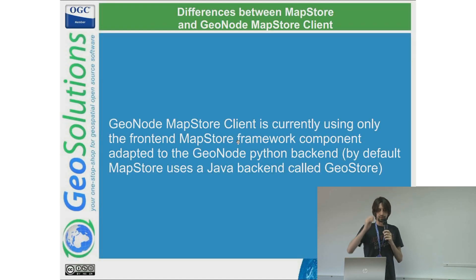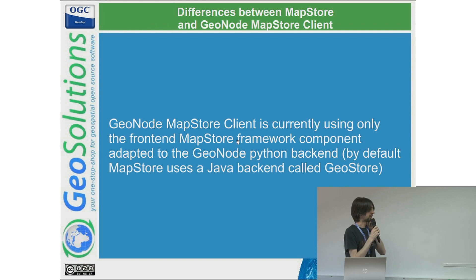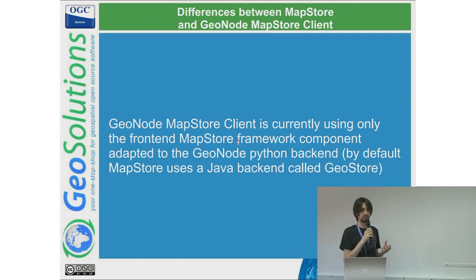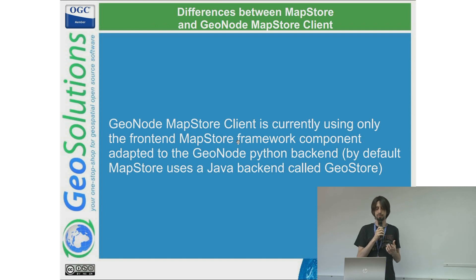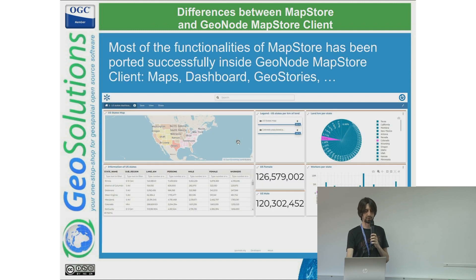A question that comes up a lot in the community is: what's the difference between MapStore and the GeoNode MapStore client? Currently, the GeoNode MapStore client uses the MapStore front-end framework but does not include the back end, because MapStore itself provides a GeoStore back end that is not included in GeoNode. So when working on the integration, we take piece by piece what GeoNode provides and integrate it inside the GeoNode core environment.